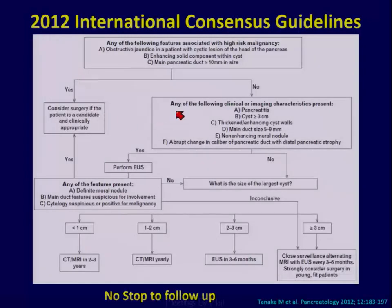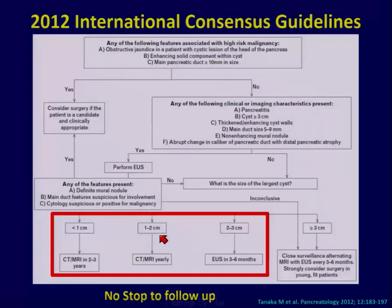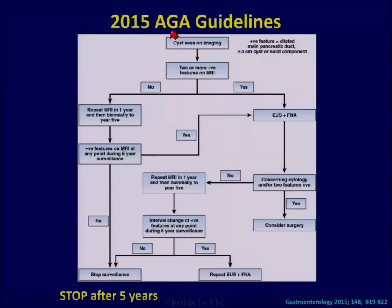The Sendai criteria were revised in 2012 and went to another extreme. Regardless of the size of the lesion — whether less than one centimeter, one to two centimeters, or two to three centimeters — there was no end to follow-up. This led to over-utilization of imaging and EUS. The 2015 American Gastroenterology Association guidelines suggested stopping surveillance at five years regardless of size, which gastroenterologists found concerning given the potential risk of developing adenocarcinoma.